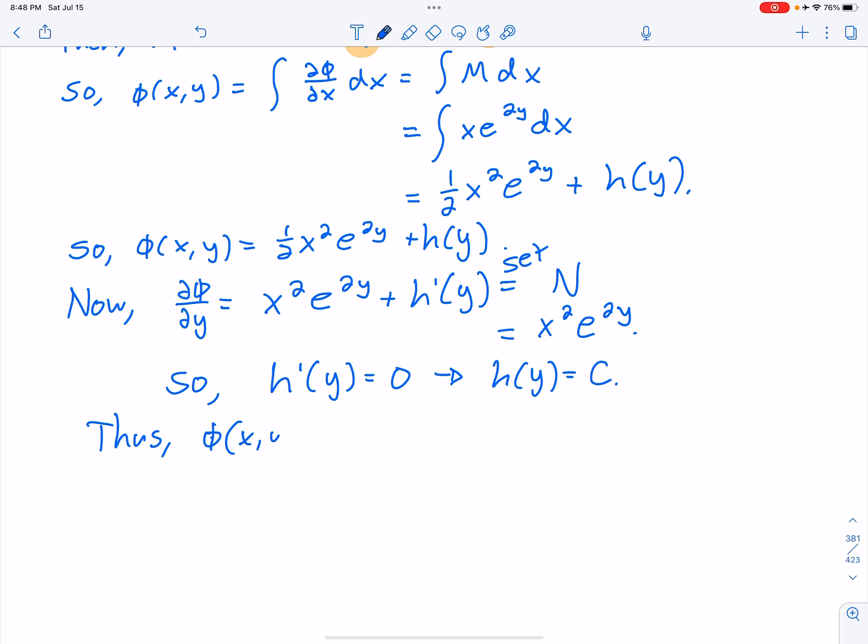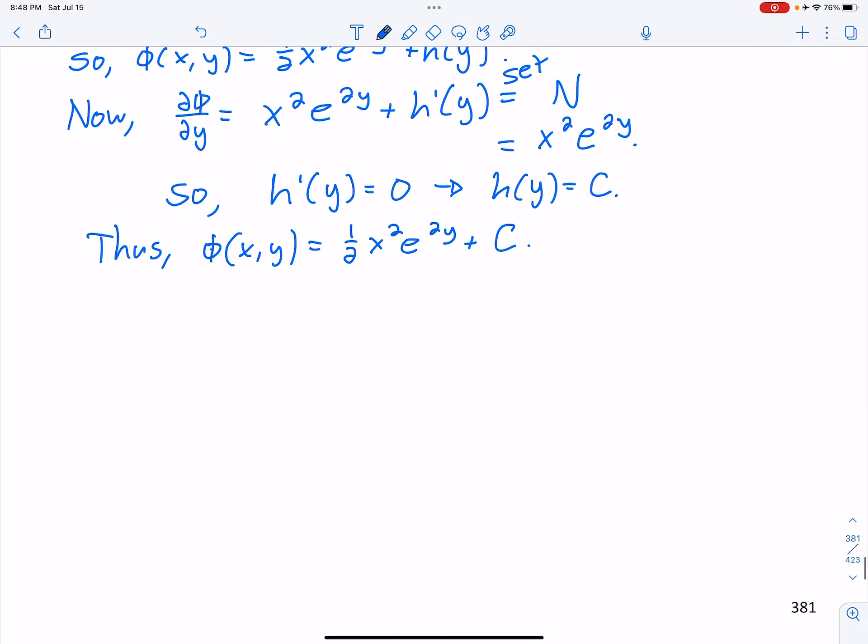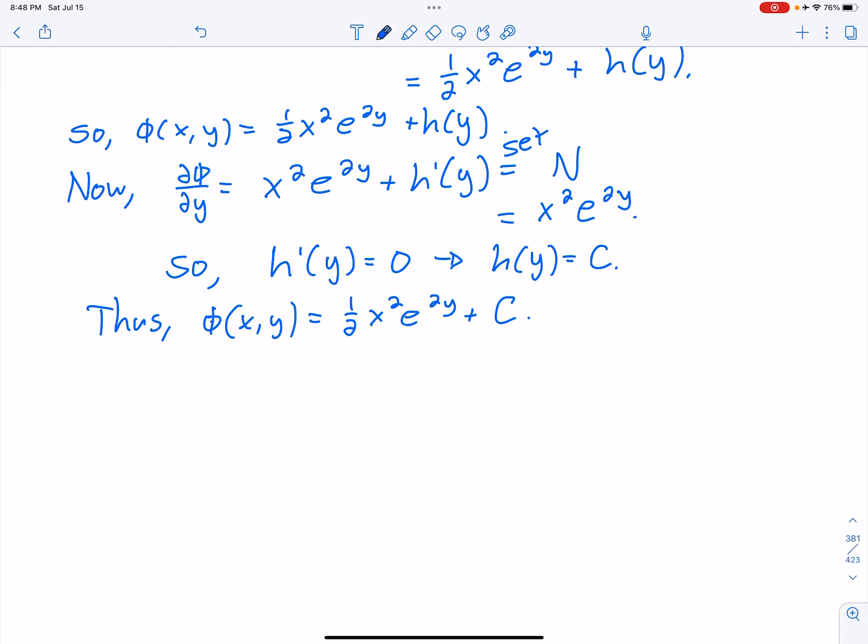Phi of X, Y is equal to 1 half, X squared, E to the 2Y, plus C. Now, we can use the theorem, since it was conservative.